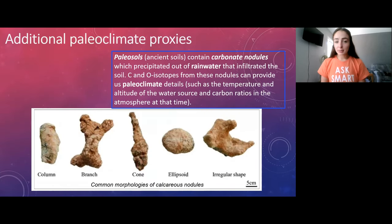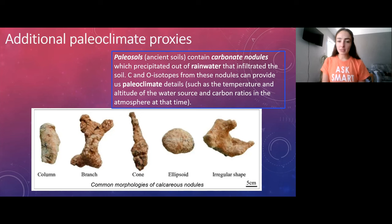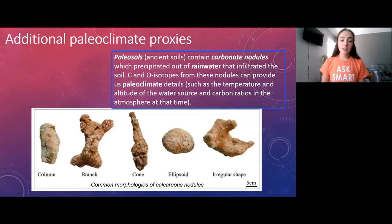There are also abiotic processes that produce calcium carbonate nodules, such as in soils. When rainwater infiltrates soils and evaporates, it can leave behind soluble minerals in nodule form. These carbonate nodules can be preserved in paleosols — ancient fossilized soils — and from them we can measure carbon and oxygen isotopes that provide paleo-climate details such as temperature, altitude of the water source, and the atmospheric carbon isotope composition at that time.